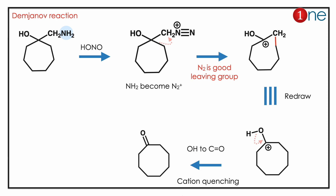So the ring opens. You have an alcohol — if you think through it carefully, the six-membered ring becomes a five-membered ring. The carbocation forms near the alcohol. The alcohol quenches it, and it forms a carbonyl — that is your final product.